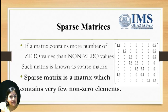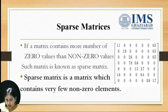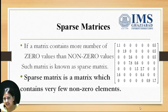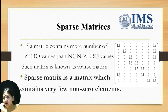A sparse matrix is a matrix which contains very few non-zero elements. That is, we can say if a matrix contains more number of zero values than non-zero values, such a matrix is known as a sparse matrix. As we can see in this diagram, we have very few non-zero values but more number of zero values. Such matrices are known as sparse matrices.